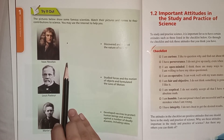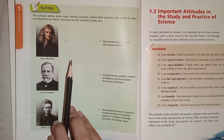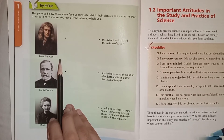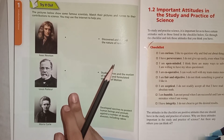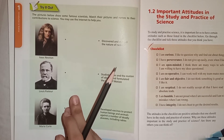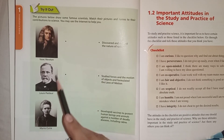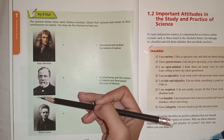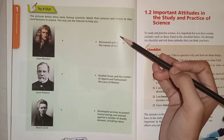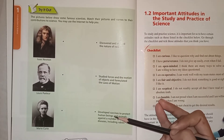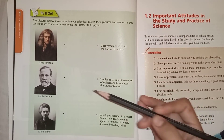Different Muslim scientists, Greek scientists, and English scientists have made discoveries in science. Different scientists have discovered different laws. You have three scientists: Newton, Pasteur, and Marie Curie — and they have their own discoveries. I am giving you a task to research what each of these scientists discovered.